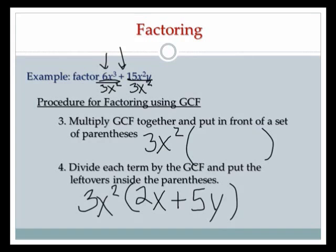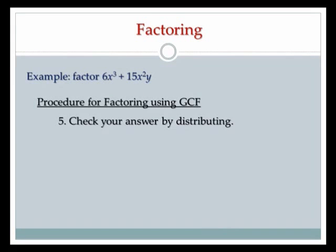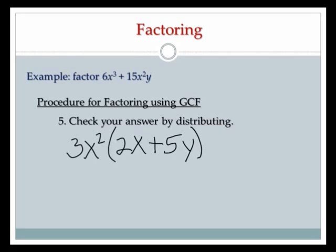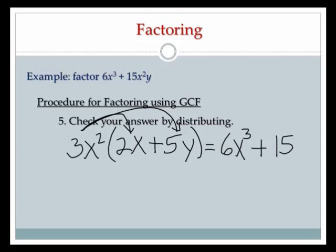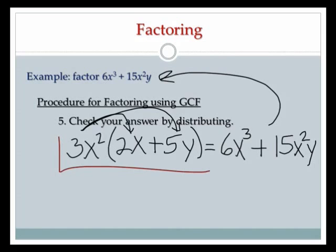Before I make that my answer, I need to check it. Step number 5 is the check — I'm going to verify by distributing. I have 3x squared as my GCF and inside I have 2x plus 5y. 3x squared times 2x: 3 times 2 is 6, x squared times x is x cubed. Plus 3x squared times 5y: 3 times 5 is 15, and x squared y. That matches what I originally started with. So my final answer is 3x squared times parentheses 2x plus 5y.